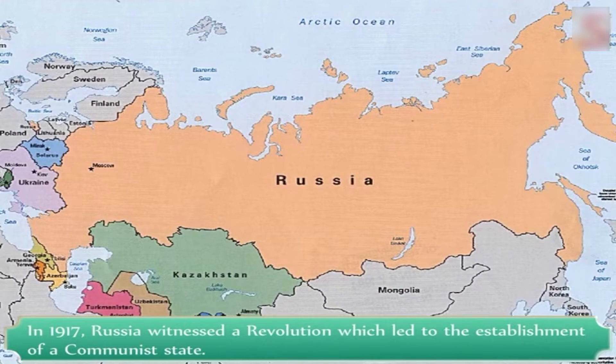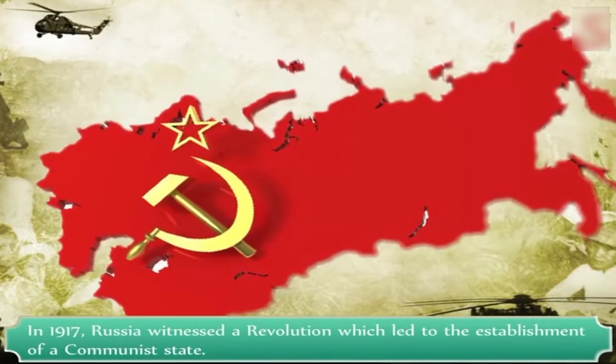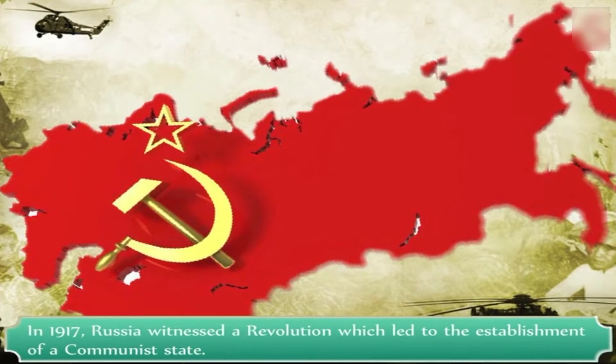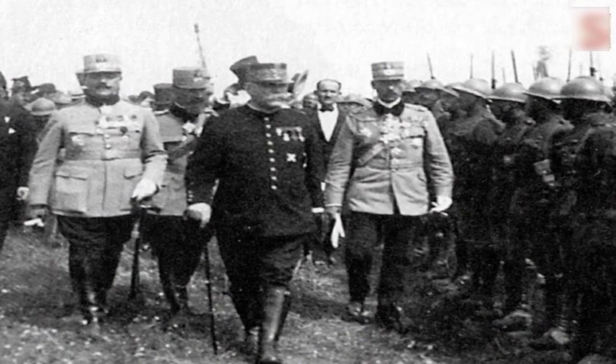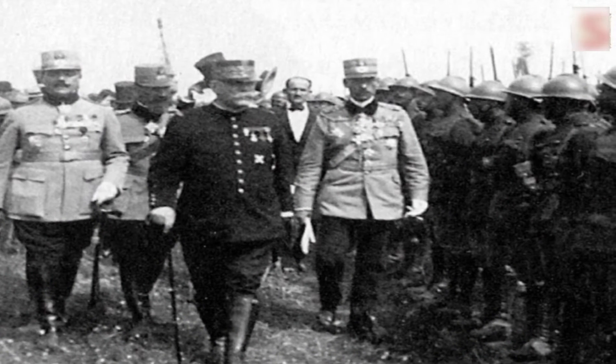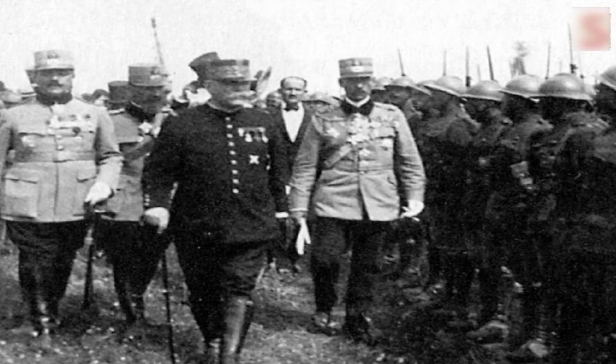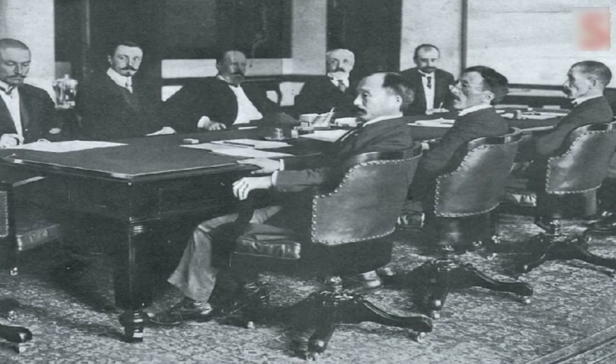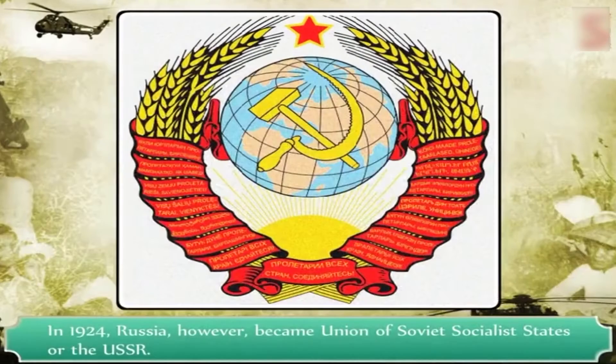The First World War had severe effects on the people. There were social agitations all over Europe and workers inclined themselves to ideologies of socialism and communism. In 1917, Russia witnessed a revolution which led to the establishment of a communist state. One of the first things the newly formed government did was to end the country's participation in the war and begin peace negotiations. In 1924, Russia became the Union of Soviet Socialist States, or the USSR.